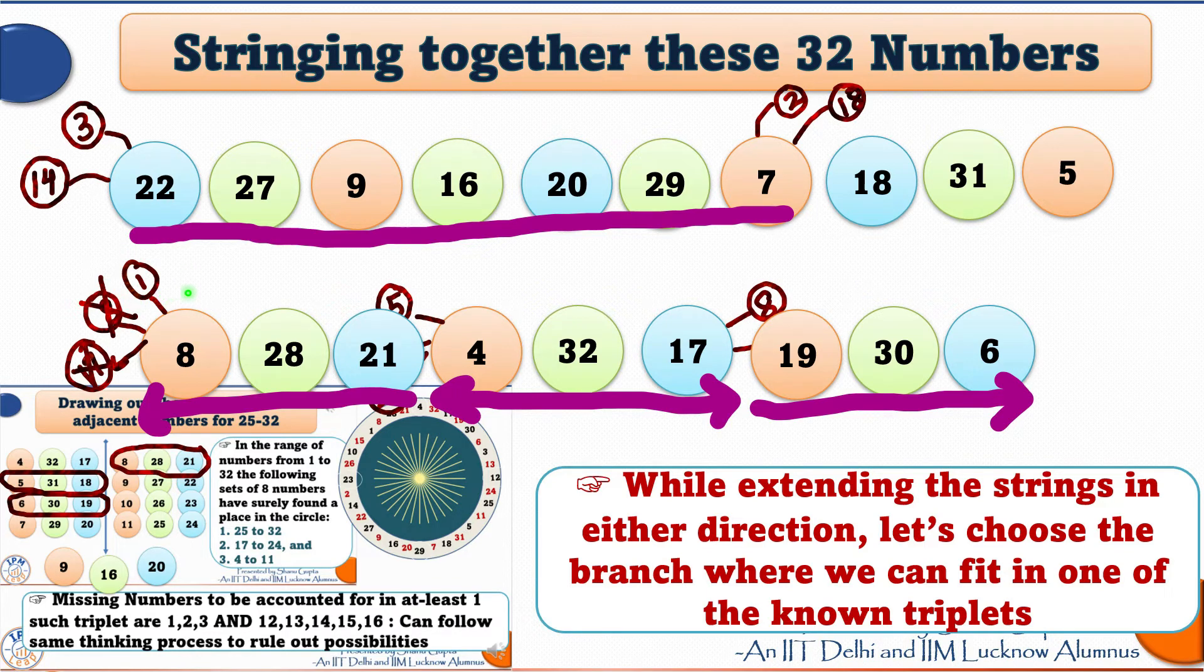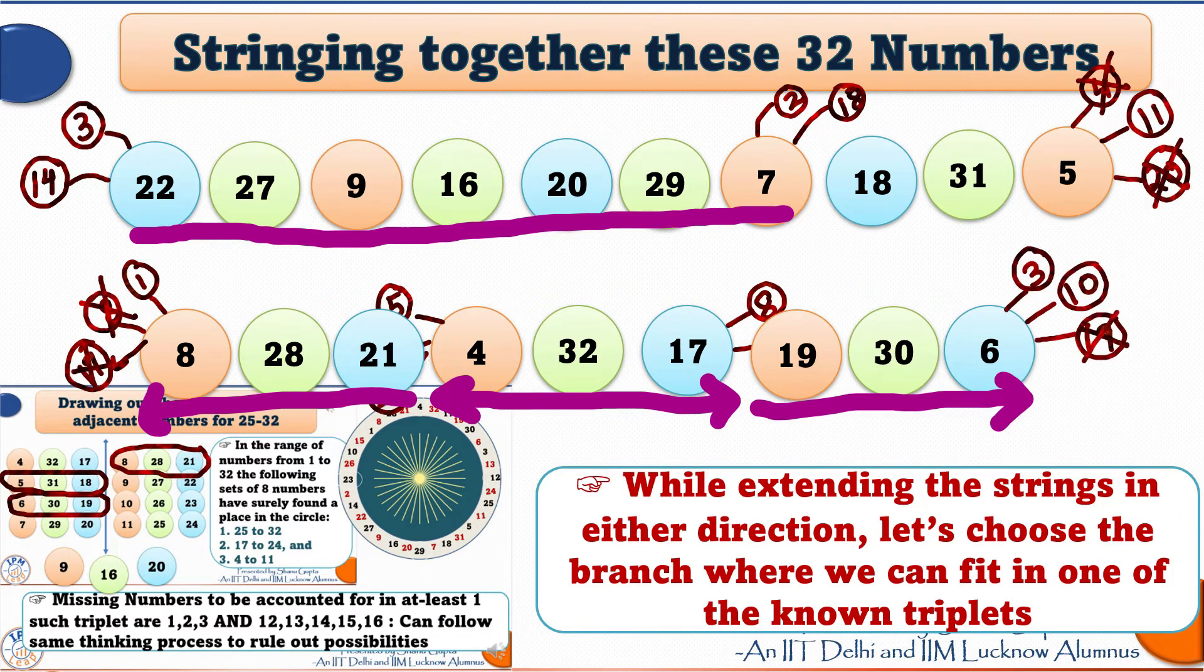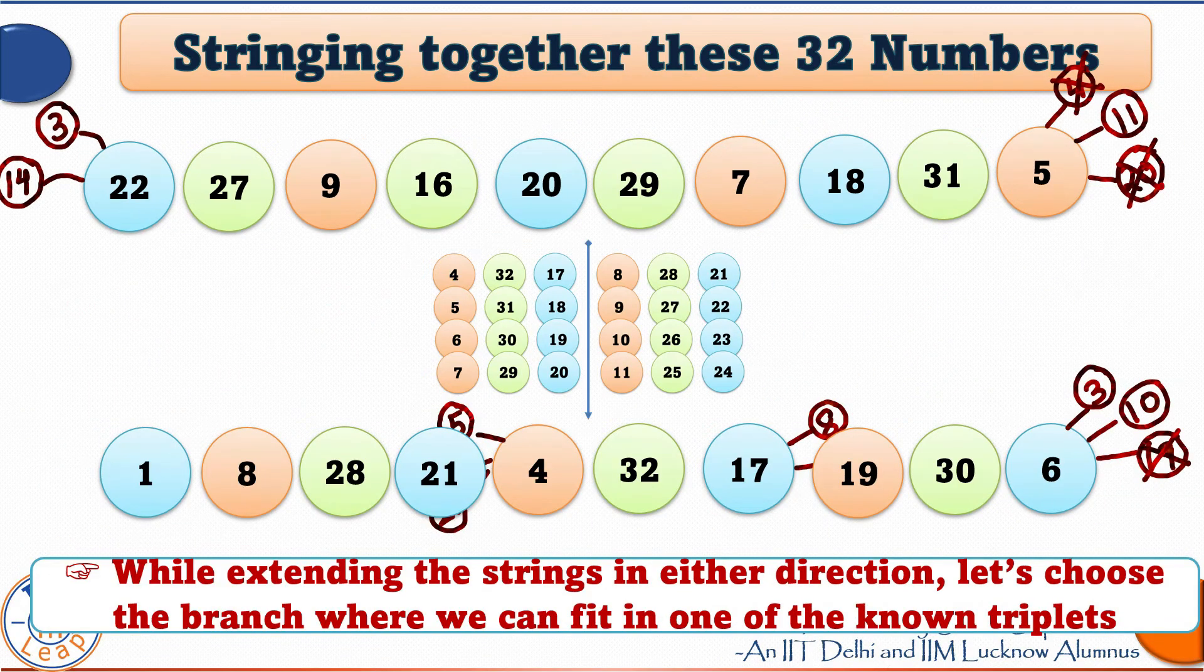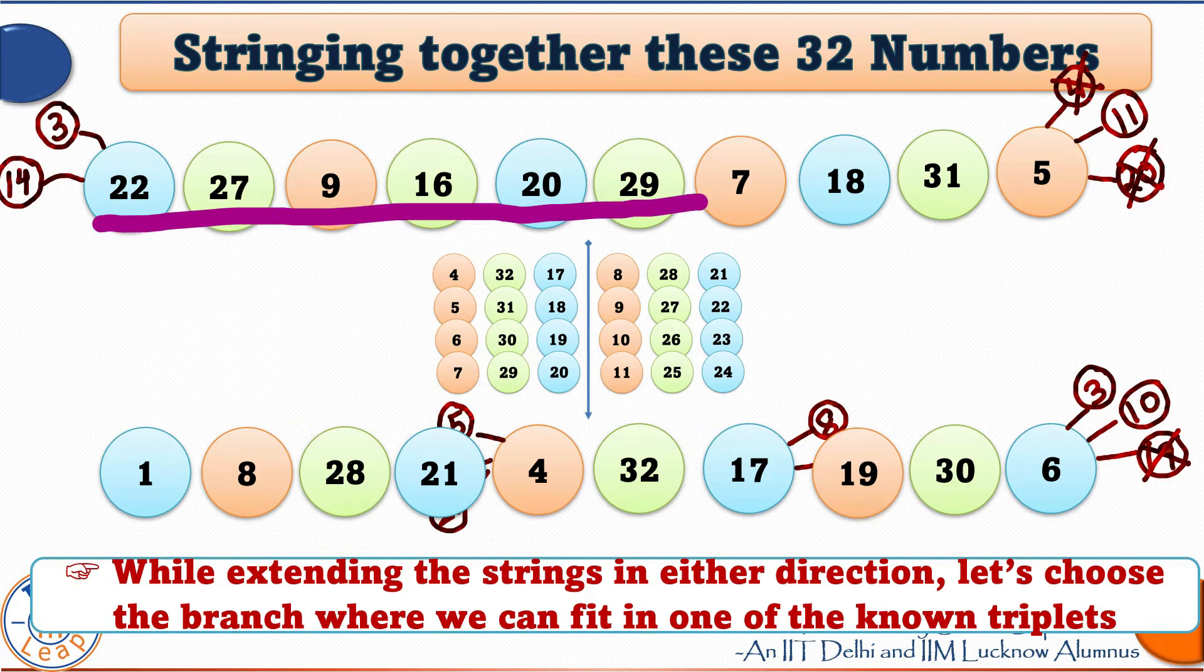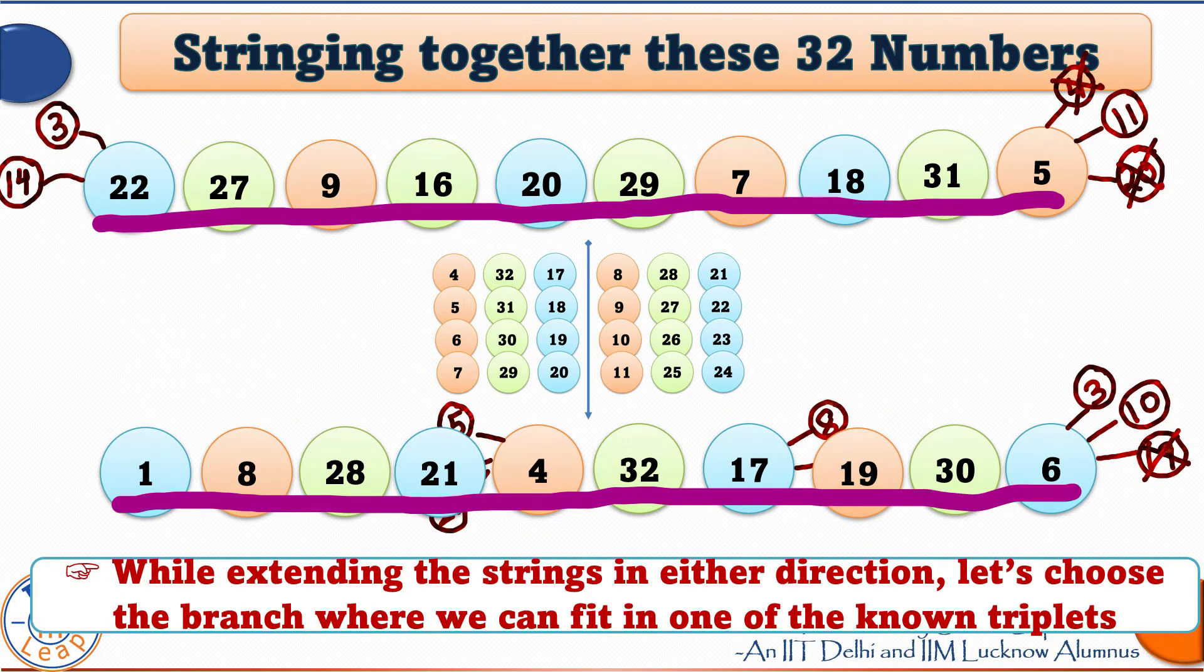Before 8 comes number 1. Wow, that's amazing. Similarly, let's draw out branching possibilities for all ends of these two strings. And let me remind you, while extending the strings in either direction, let's choose the branch where we can fit in one of the known triplets.